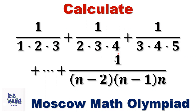This is a special sum. Look at each denominator — it is a product of three consecutive numbers: 1 times 2 times 3, then 2 times 3 times 4, then 3 times 4 times 5. The last one is n minus 2 times n minus 1 times n. Each denominator is increased by 1: here's 1, here's 2, here's 3, and the last one is n minus 2.